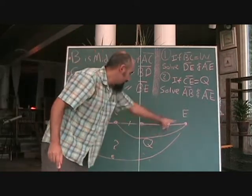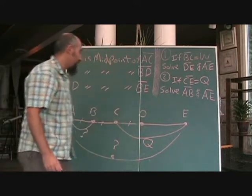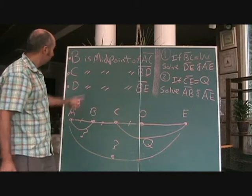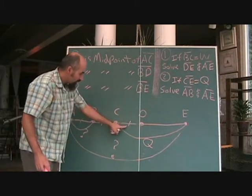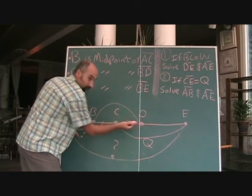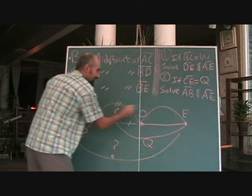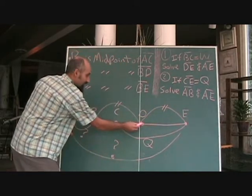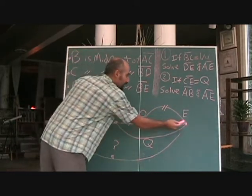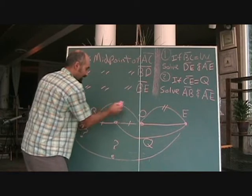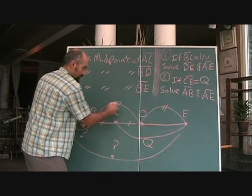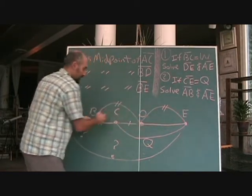So CE is Q. Now, what was our relationship? This guy was equal to this guy, and we knew that this guy was equal to this guy, because D was the midpoint of B and E. So if that's the length, that's the length, it's the same length.